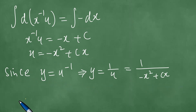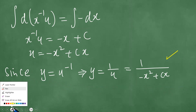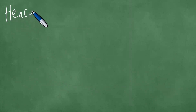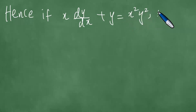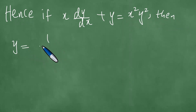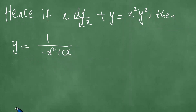Hence, if x dy/dx plus y equals x squared y squared, then y equals 1 divided by minus x squared plus cx. This is the answer, and we have solved this problem in detail. Thanks everybody for your time and attention, goodbye.